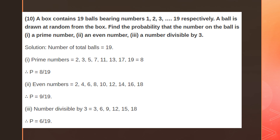What is the probability of getting a number divisible by 3 from 1 to 19? The numbers divisible by 3 are: 3, 6, 9, 12, 15, and 18. So the probability of getting a number divisible by 3 equals 6 by 19.